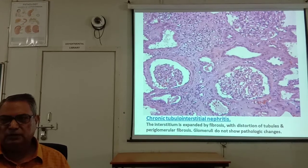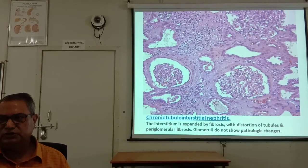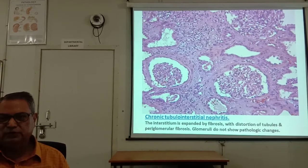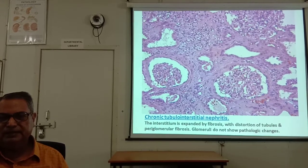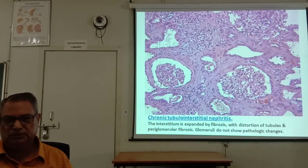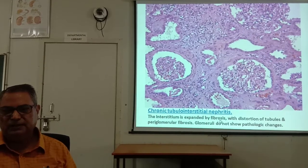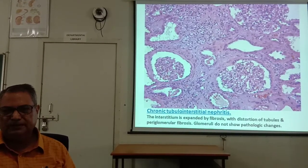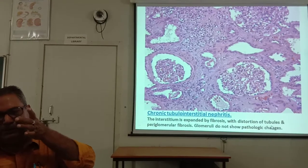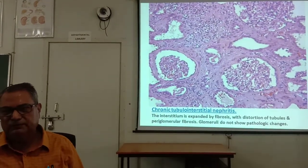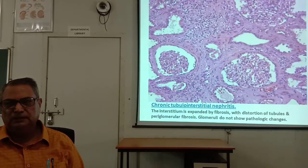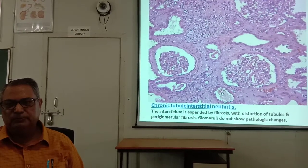The features of chronic tubulo-interstitial nephritis include periglomerular fibrosis around the glomerulus and collection of colloid material in dilated tubules, which is called thyroidization of the tubules. The interstitium is expanded by fibrosis with distortion of the tubules and periglomerular fibrosis, while glomeruli do not show pathologic changes. The interstitium is mainly involved by chronic inflammatory infiltrate of lymphocytes, plasma cells, and macrophages, and the tubules are dilated.